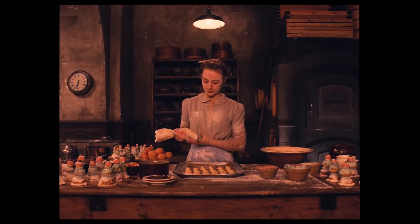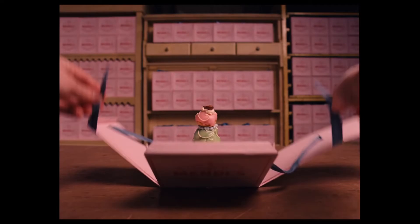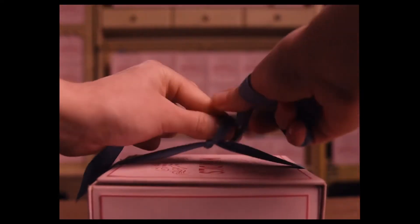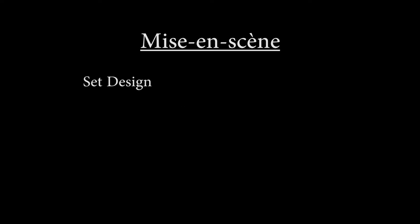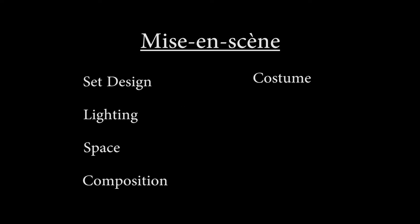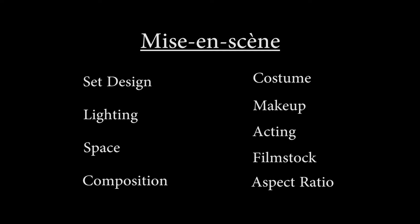To make sense of all of this on a cinematic level, we need to understand a fancy word called mise-en-scène, which is basically just everything in front of the camera. Elements like set design, lighting, space, composition, costume, makeup, acting, film stock, and aspect ratio are all parts of mise-en-scène. For this visual analysis, we are only going to focus on four of these.